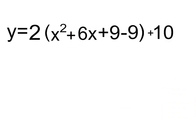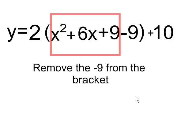Now, I've successfully generated my perfect square trinomial. That's it there, x squared plus 6x plus 9. But I have this negative 9 inside the bracket, and I'm going to have to remove that from the bracket. And I need to be careful when I do that.